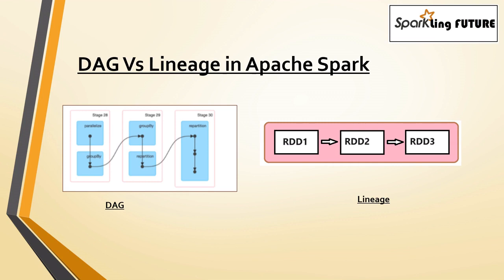Coming to the lineage, it will have the connection from one RDD to another. Because RDDs are immutable, when you apply one transformation on one RDD or data frame, it will create another RDD or data frame only — it will not return any other thing. So when you are having that kind of series of steps, a lineage will be created like that.